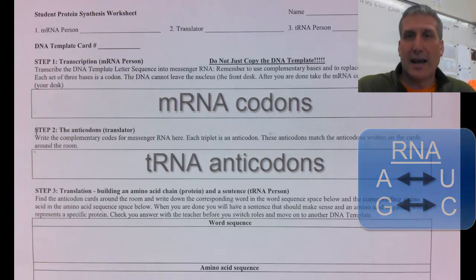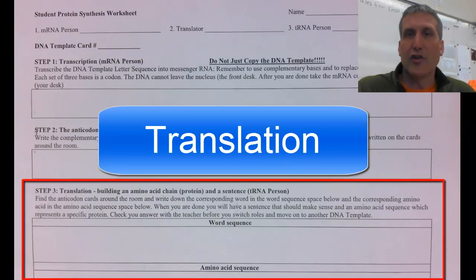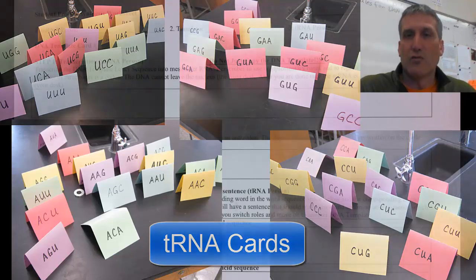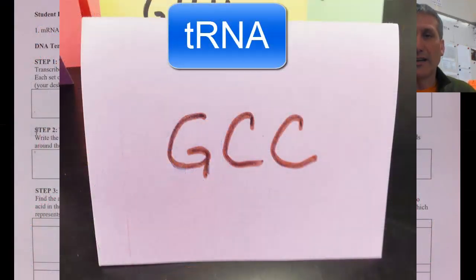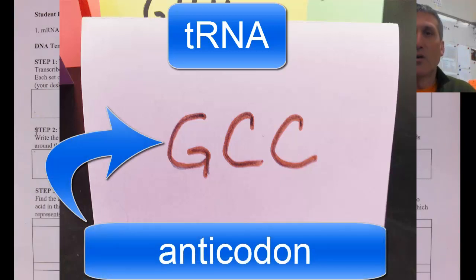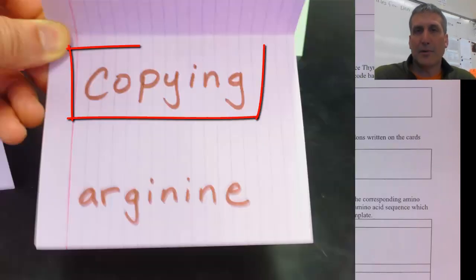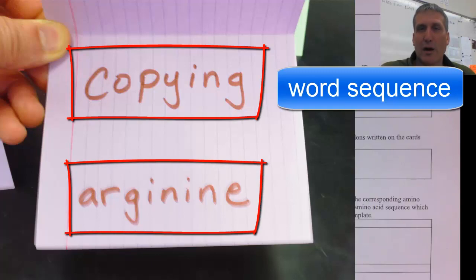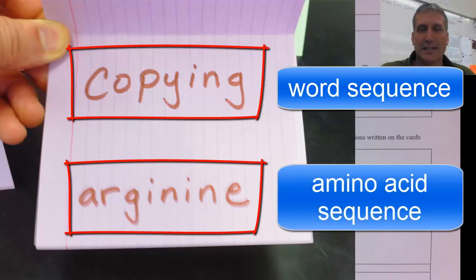Then the last step is translation. The third person, the tRNA person, will actually go around the room and find the cards that have the correct anticodons on them. The cards represent a transfer RNA and contain the anticodon. When you find the correct anticodon, you open up the card and the top word will be part of the sentence sequence or the word sequence, and the bottom word will be an amino acid which goes in the amino acid sequence box.